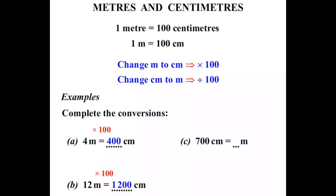Our next one: 700 centimetres equals how many metres? Well this time we are changing from centimetres to metres. And if we do this we need to divide by 100. So 700 divide by 100. Well if we divide by 100 we simply knock off 1, 2 zeros. We just cancel out the two zeros. We are left with 7.